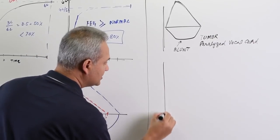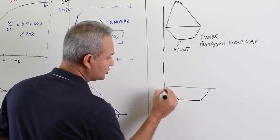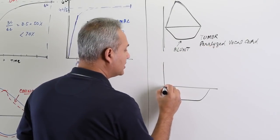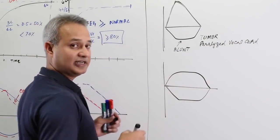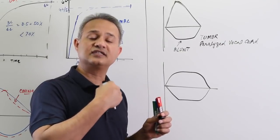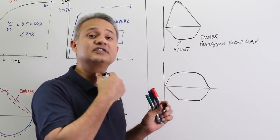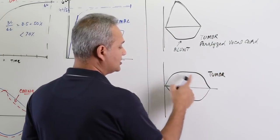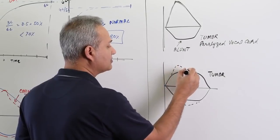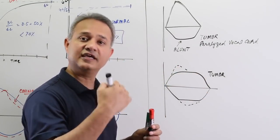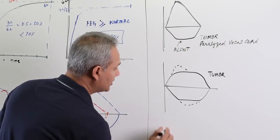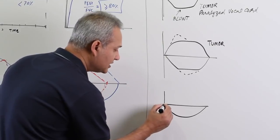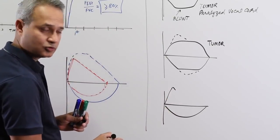If you see a graph where both inspiration and expiration are blunted — blunting on both sides — that means there is a constant resistance in the airway. This is not pulmonary obstruction; this is an extra-pulmonary problem — this may be a fixed tumor in the airway. In such patients, peak flows for both inspiration and expiration are not found because of that constant resistance.